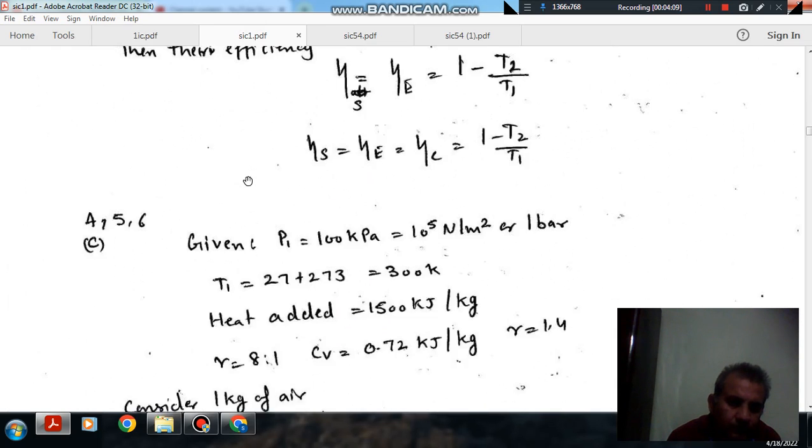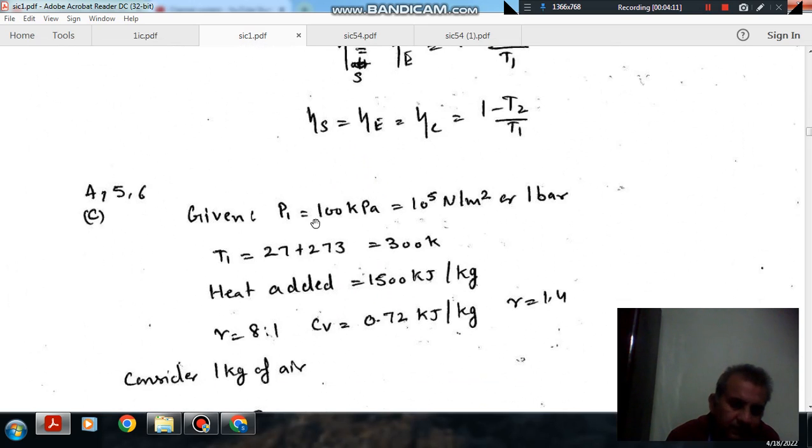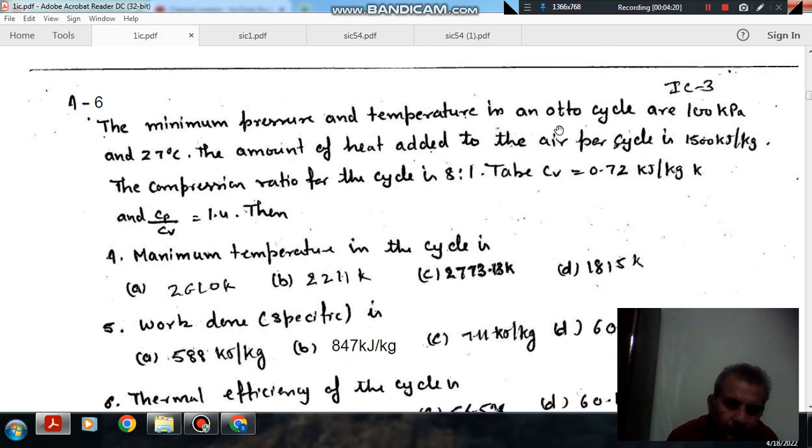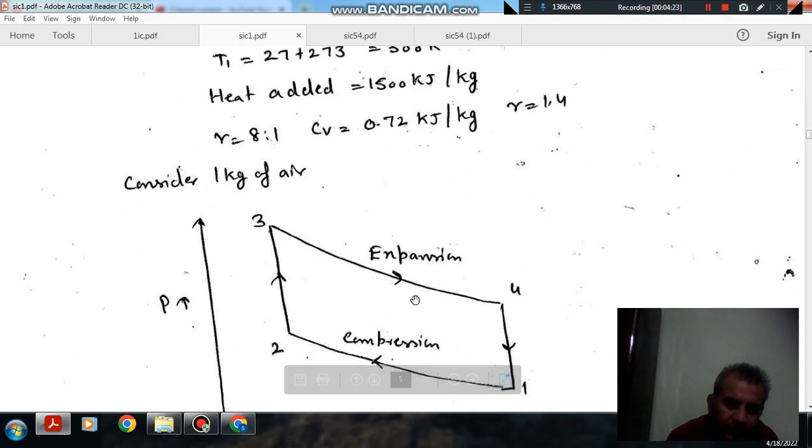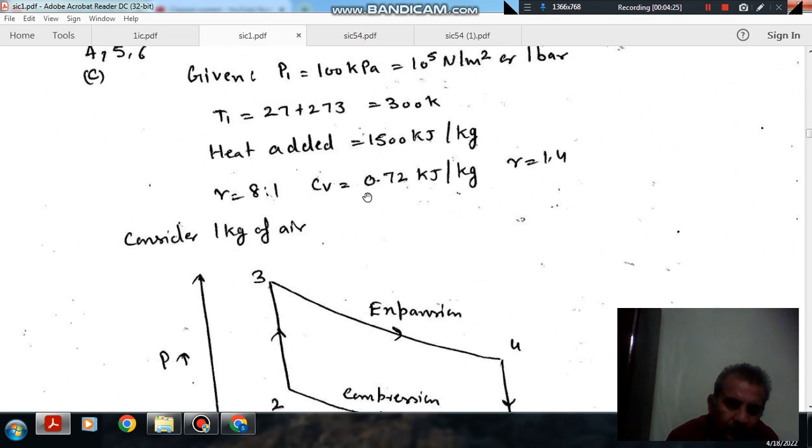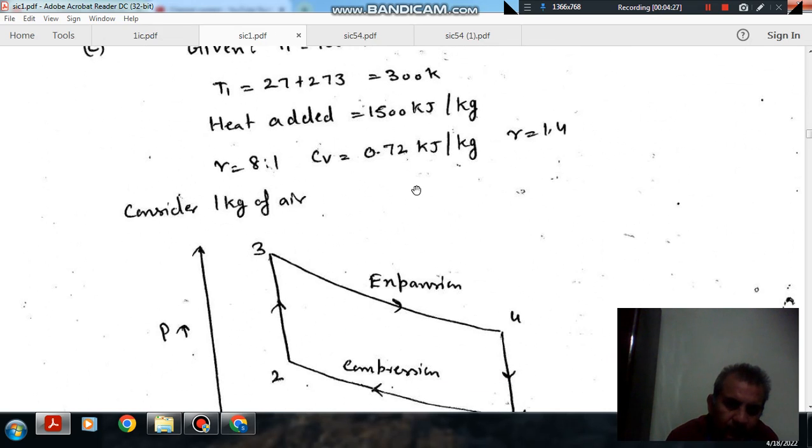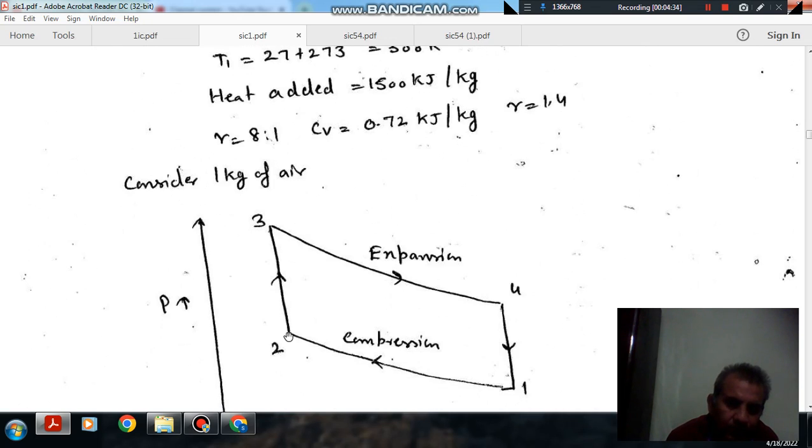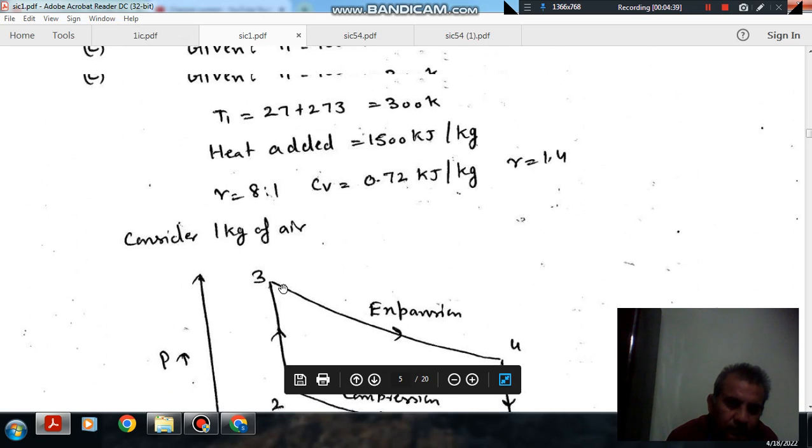So, the initial pressure is 100 kPa and temperature is 27 plus 273, 300 K. Heat added is 1500 kJ per kg. That is heat added during process 2-3.